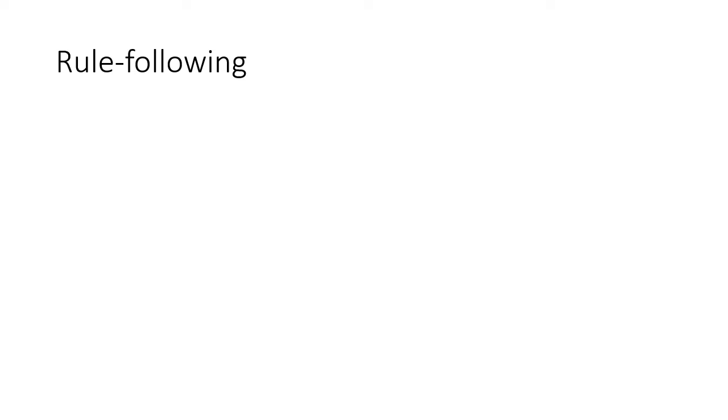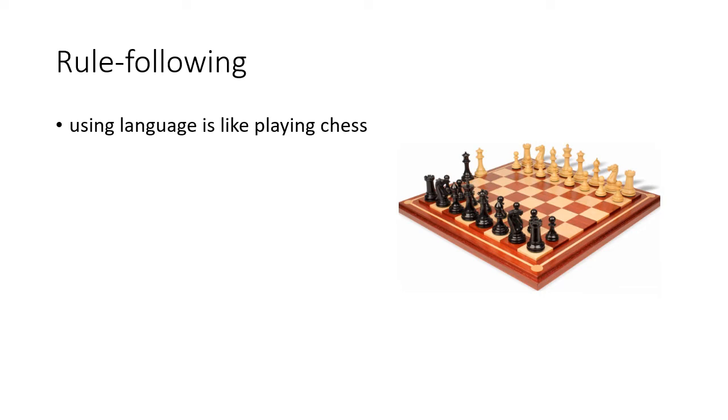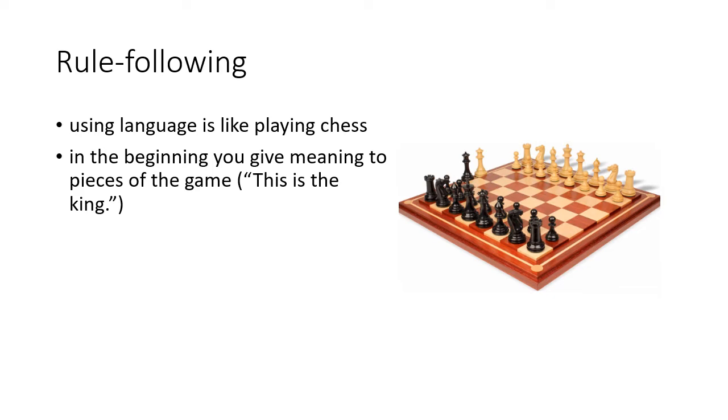When Wittgenstein was trying to explain how language works, he usually used the term 'rule-following.' That's because, according to Wittgenstein, using a language is like playing a game, for example chess. In the beginning, you give meaning to pieces of the game. For example, you say this is the king, this is the knight, this is the rook, this is the pawn, and so on. And then you have to follow the rules to play successfully.